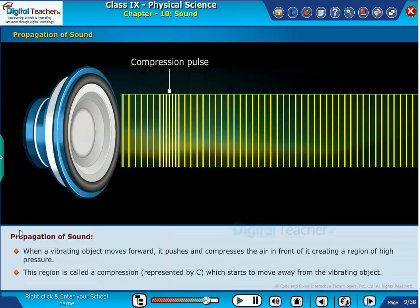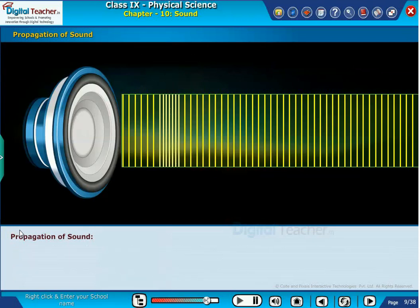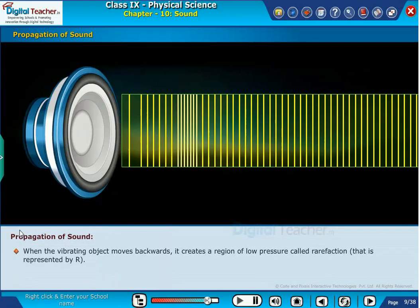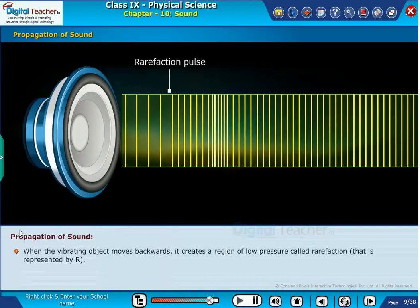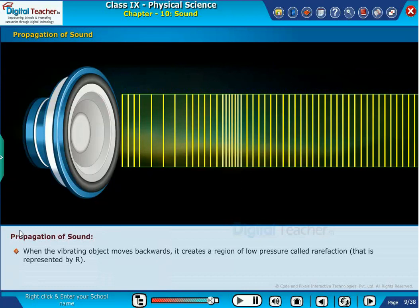When the vibrating object moves backwards, it creates a region of low pressure called rarefaction that is represented by R.